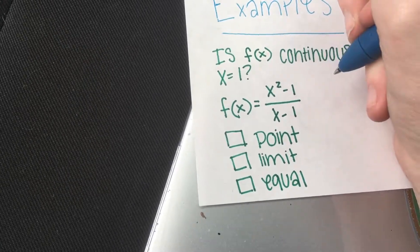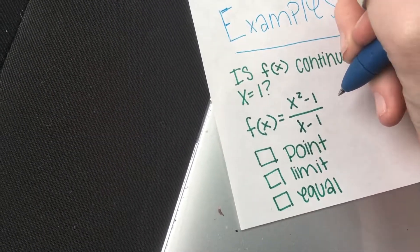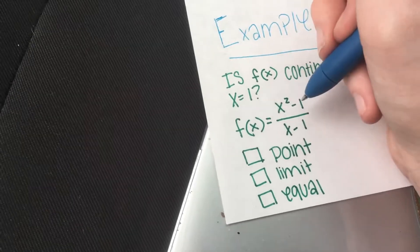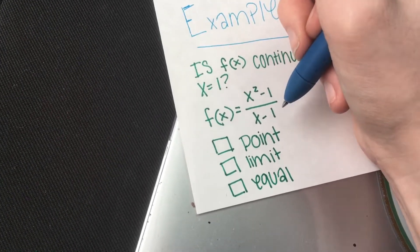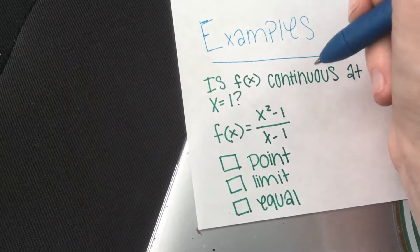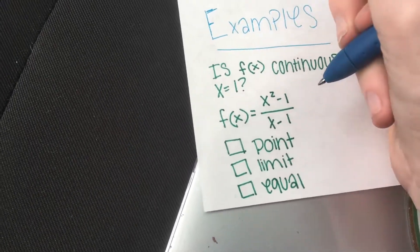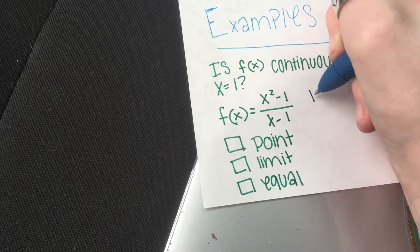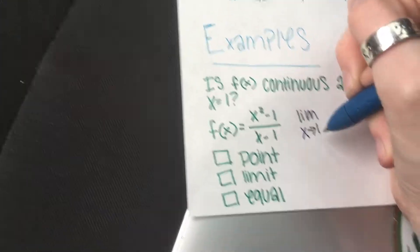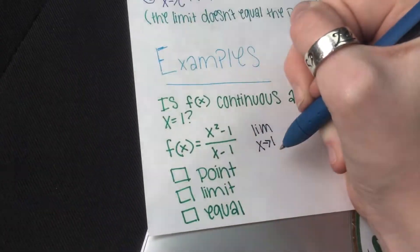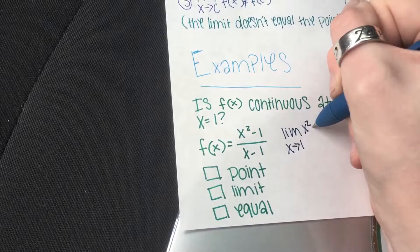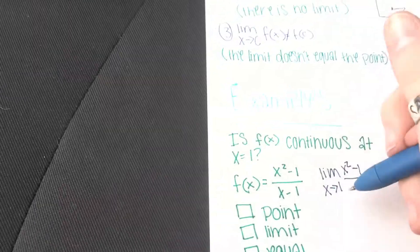We are trying to find if x equals 1 is continuous, but if we were to plug this in as it is right now, 1 minus 1 is 0 and 1 minus 1 is 0 on the bottom again, which means that is undefined, which we cannot do. So first we need to set up our equation. So is the limit as x approaches 1, that's what we're trying to find. So then we put in our equation, so that would be x squared minus 1 over x minus 1.